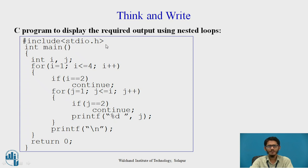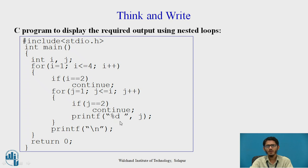Here is the C program to display the required loop output. We include the header file, then the main function declaration and variable declaration. We start the outer loop: i equal to 1, i less than or equal to 4, i plus plus. If i is equal to 2, we continue — meaning we skip that value of i. The inner loop has j going from 1 to the value of i. In the inner loop also, if j equals 2, we continue, skipping that value. Otherwise, we print the value of j using %d. For every line, we display numbers on a new line using backslash n. That concludes the program.